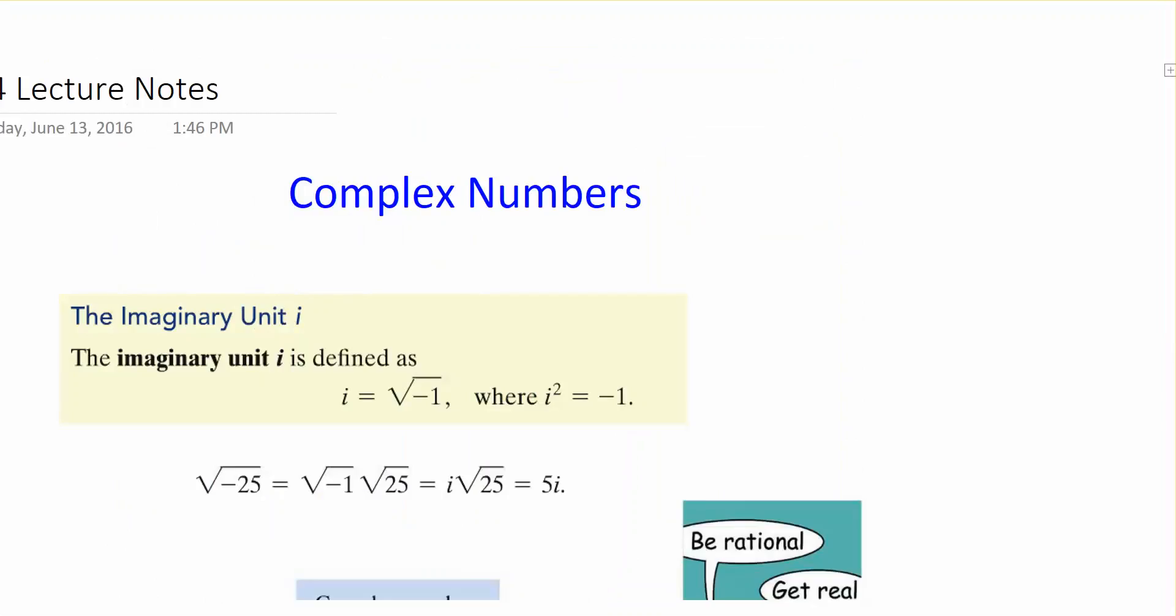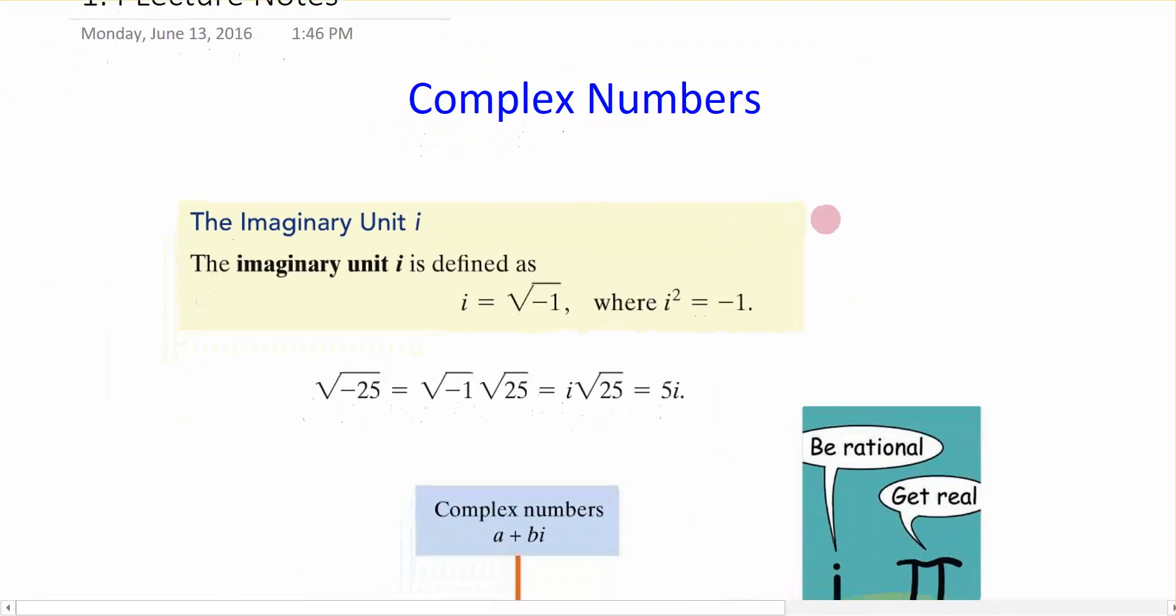Complex numbers are real numbers and imaginary numbers. We already know what real numbers are, so let's talk about the imaginary unit. When dealing with imaginary numbers, we denote it by the letter i, and it's defined as: i equals the square root of negative 1.